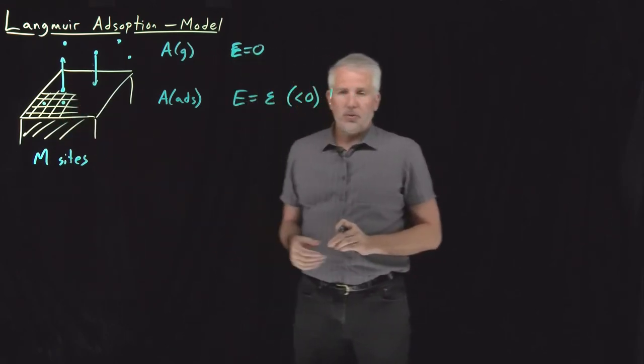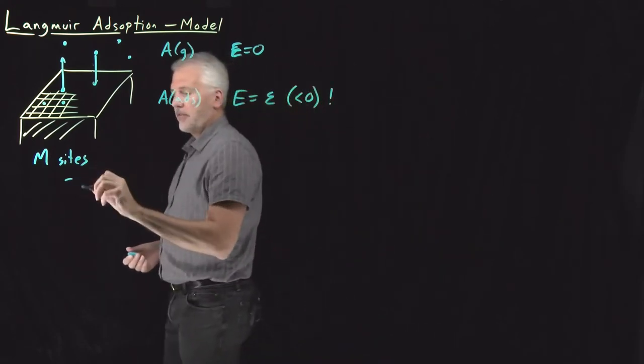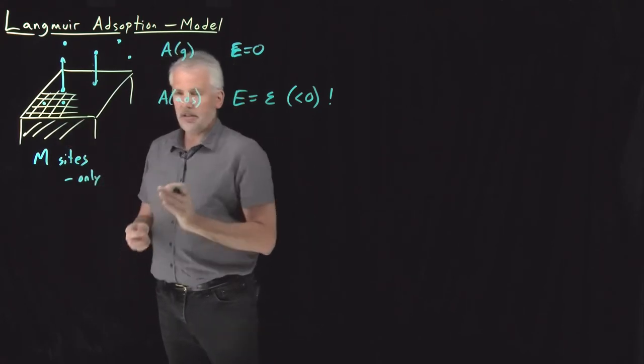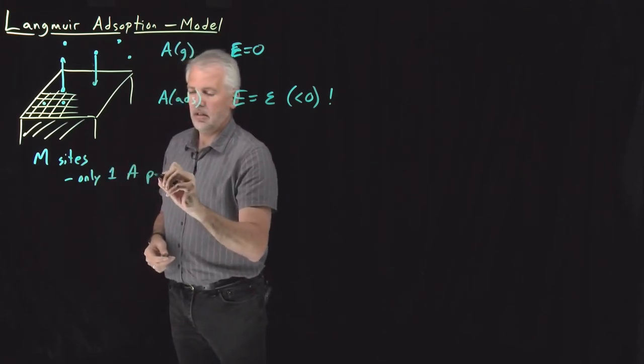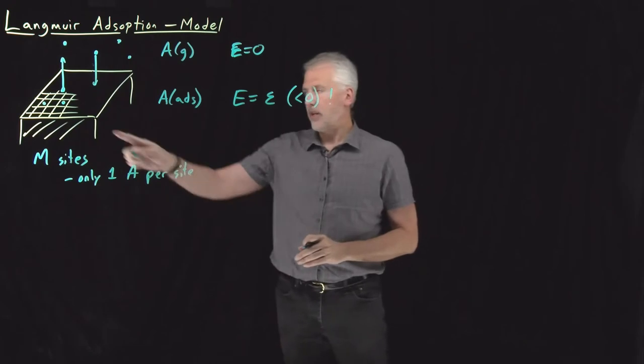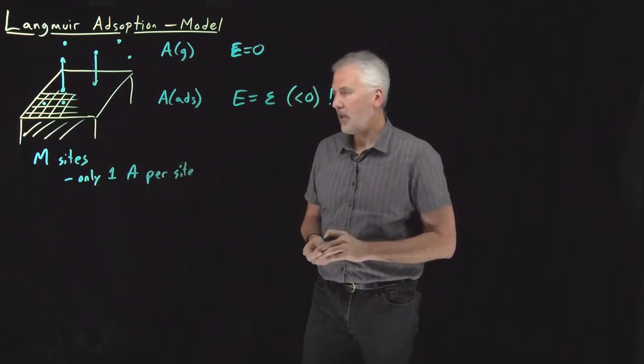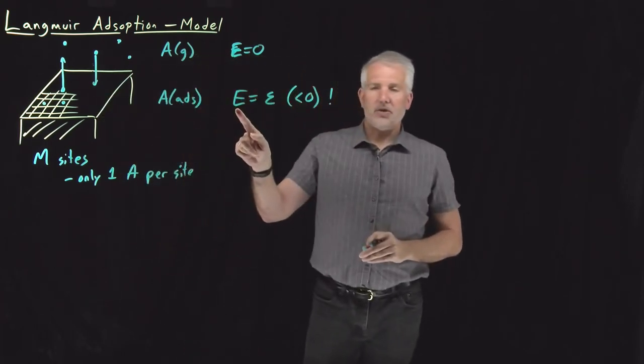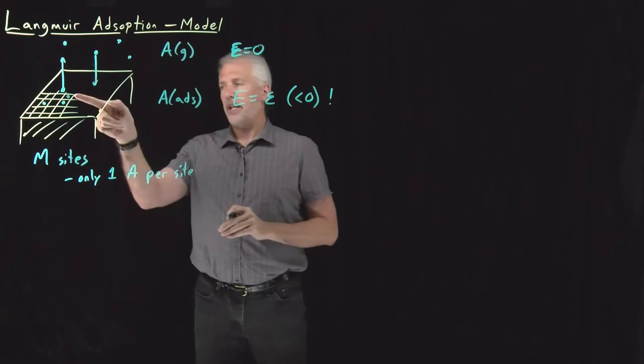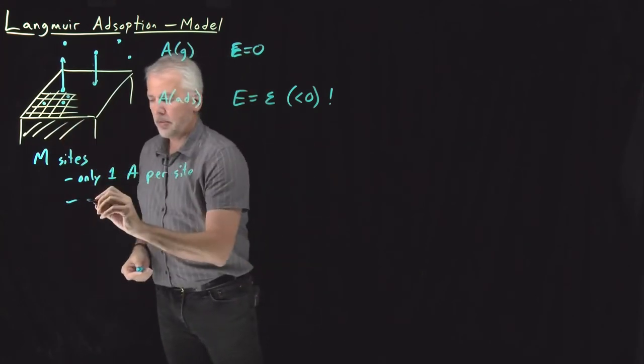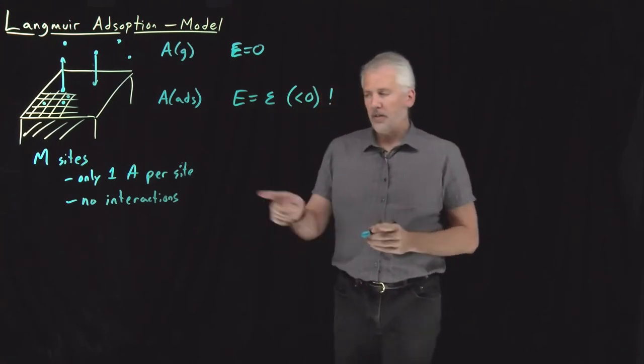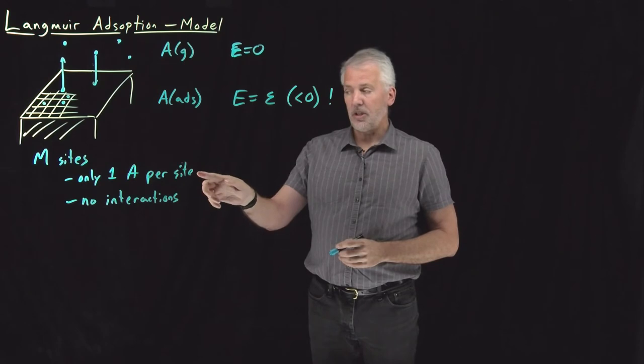All right, what else do I need to know? In specifying this model, I've made two assumptions that I'll go ahead and write down and make explicit. We have said each one of these lattice sites, each one of these boxes into which I can put a molecule, only one molecule of A can fit in one of those lattice sites. The boxes are small enough, there's no room for two molecules in one lattice site. Also, by saying the energy of an adsorbed molecule is this number, always, regardless of which lattice site it adsorbs to, also regardless of whether it's adsorbed next to another molecule or far away from other molecules, we've made the assumption that we have no interactions of the molecules on the surface.